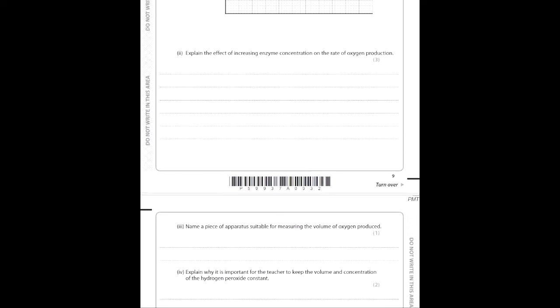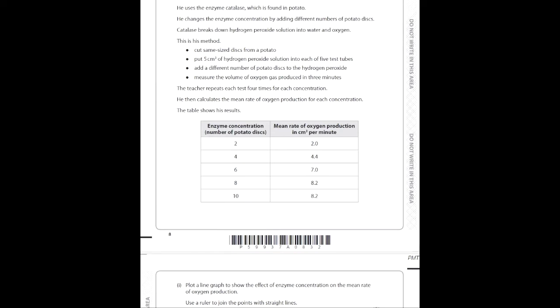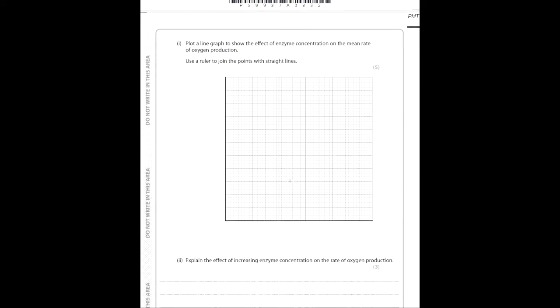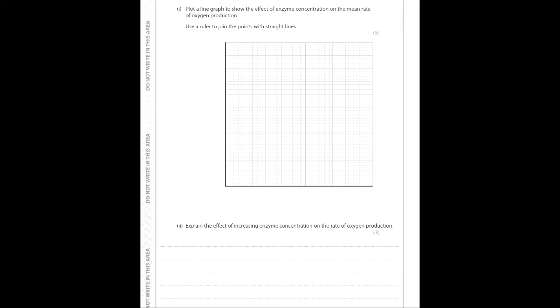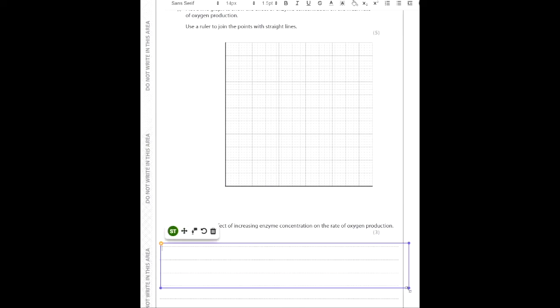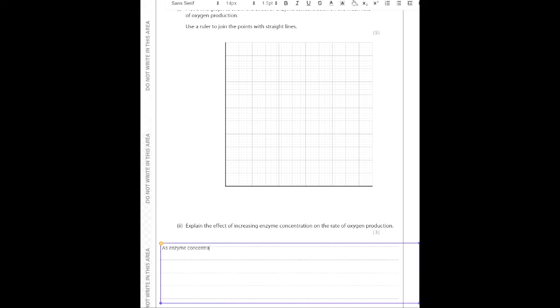Graphs are easy and they're five marks — just don't mess it up. I'll answer the explain question by looking at the table: 'Explain the effects of increasing enzyme concentration on the rate of oxygen production.' As enzyme concentration increases, so does the rate of oxygen production.